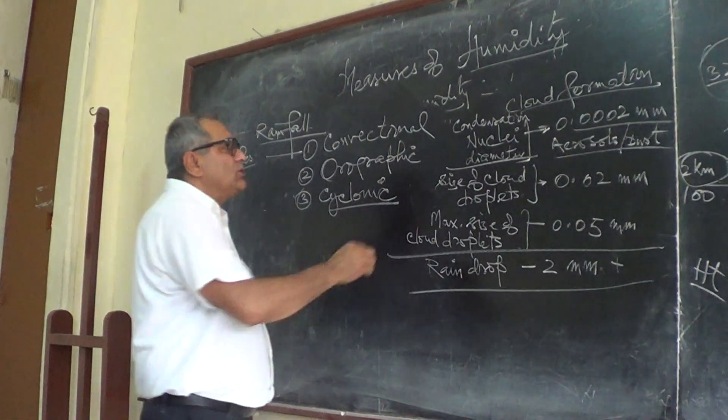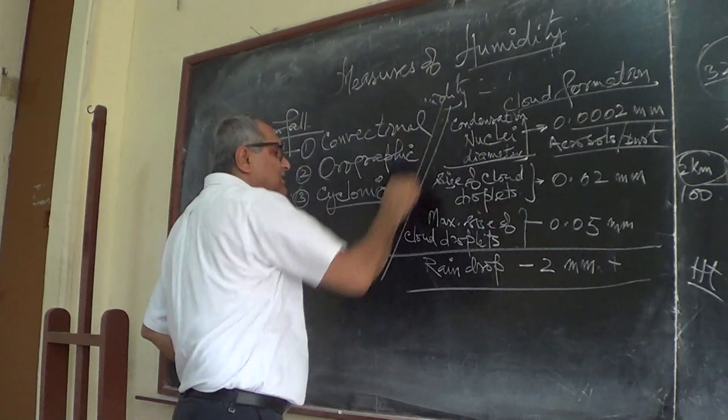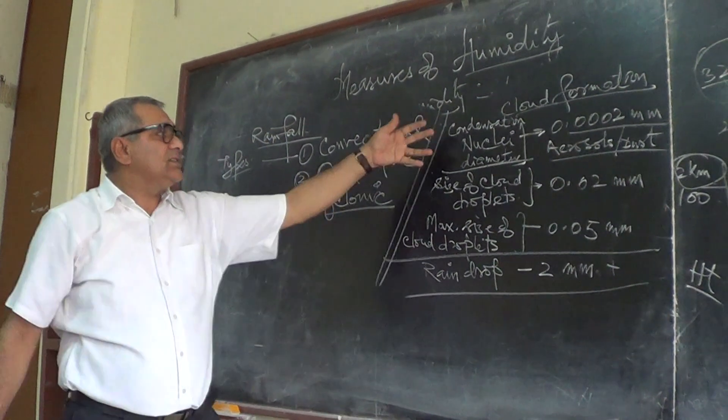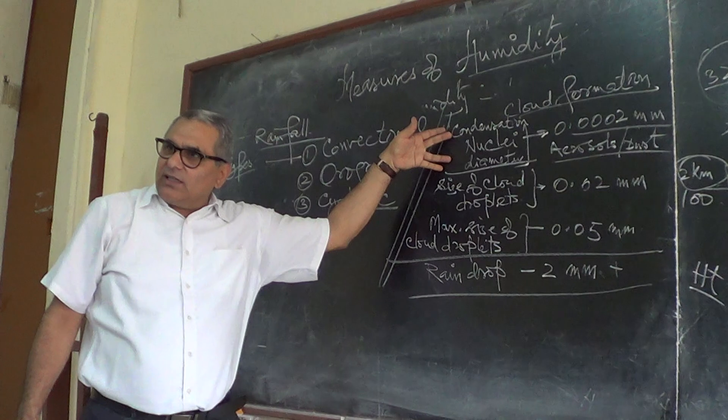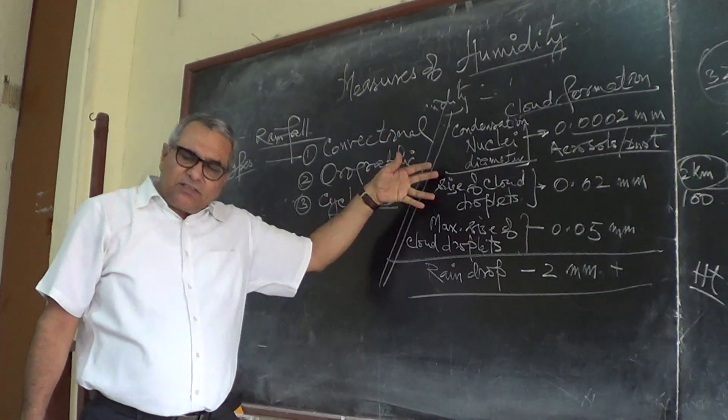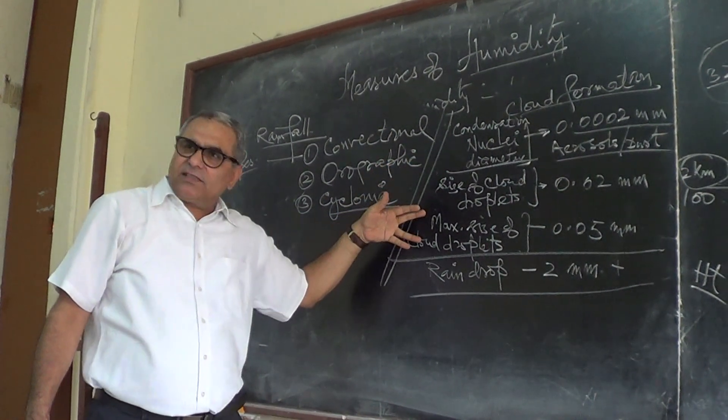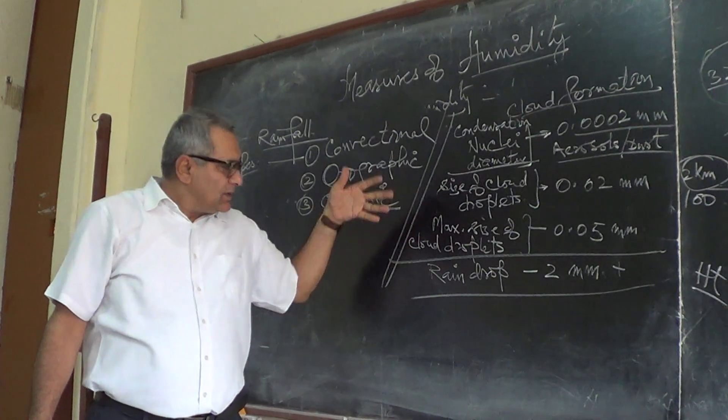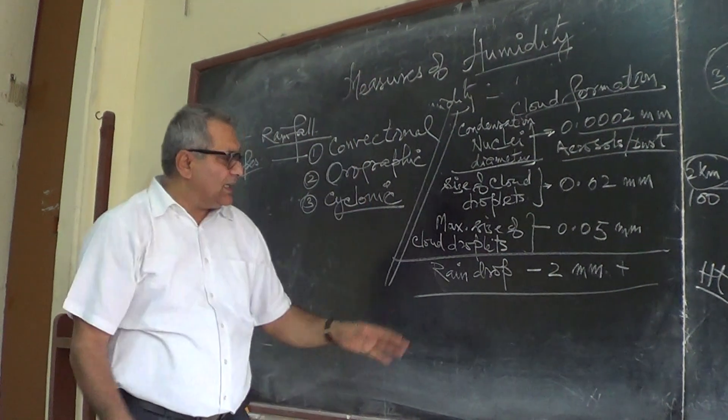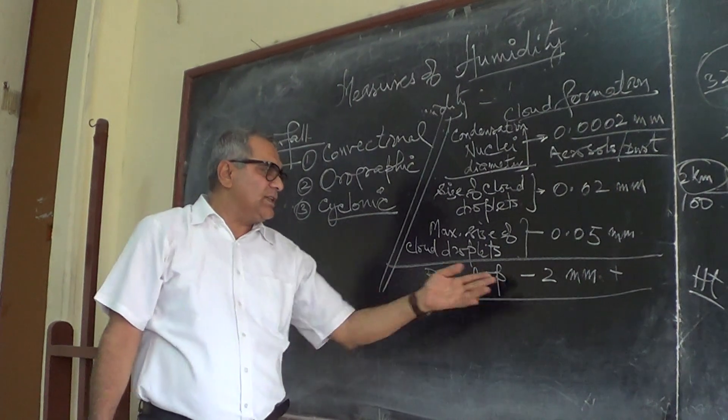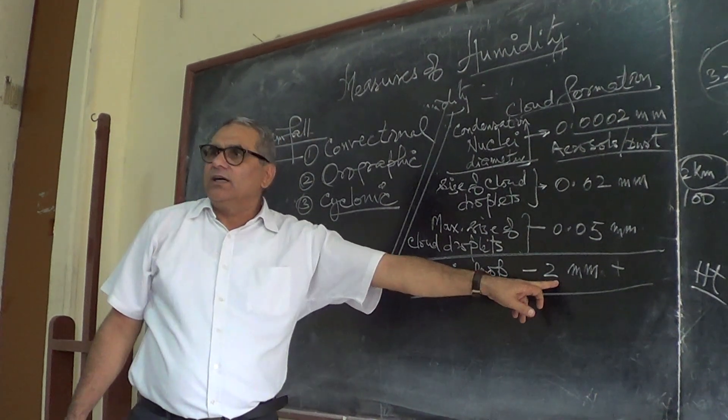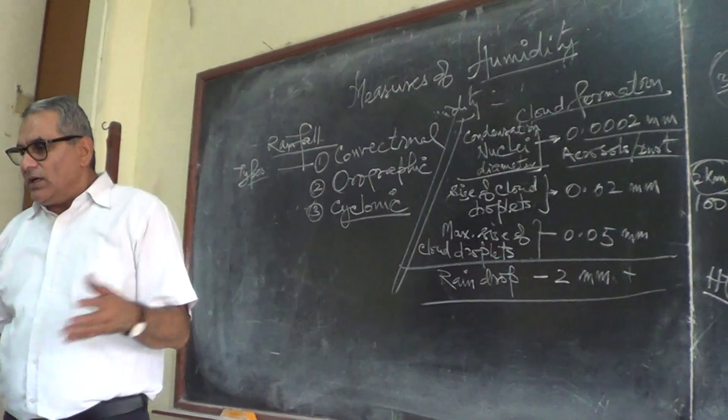So this is how the cloud formation takes place, this is the different size of the nuclei around which condensation takes place. So this is how it changes.